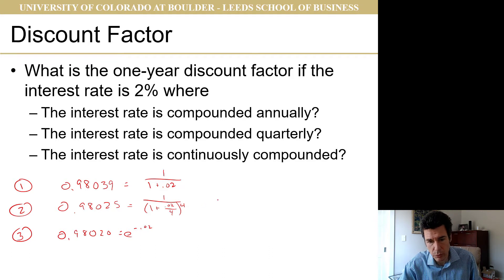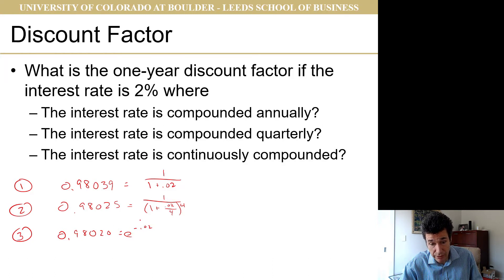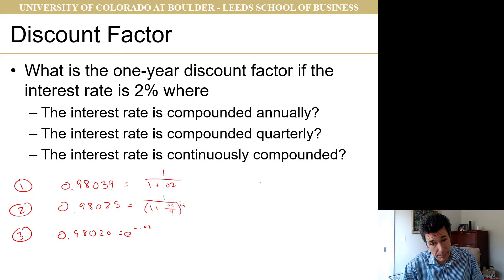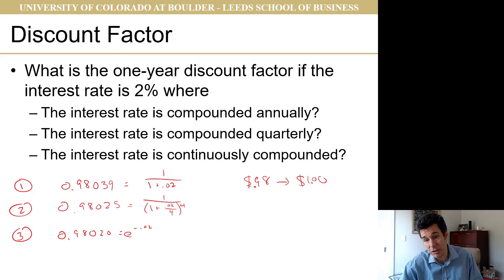Now there are two things to notice. First, 0.98020 is the smallest number — the present value of a dollar is smallest when we use continuously compounded interest rates. Second, all of these numbers are close to 0.98. If I were going to estimate the present value of a dollar at 2% interest, I don't really care how compounding works. Basically I earn 2% of my money: if I start with 98 cents, that turns into a dollar, because I earn 2 cents on approximately a dollar.